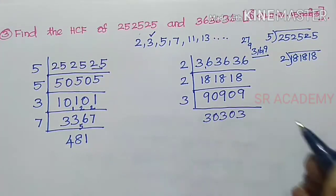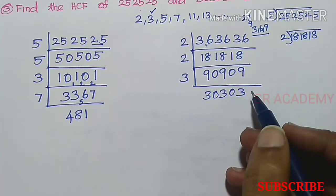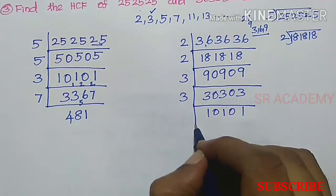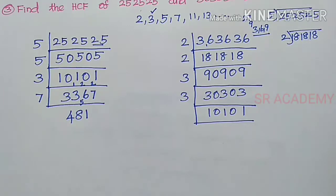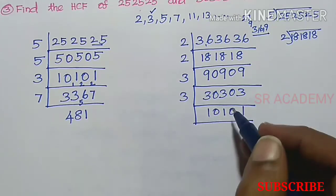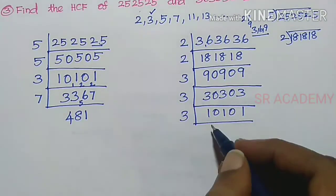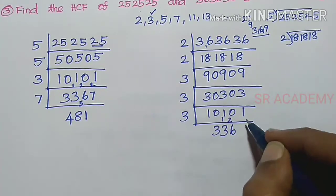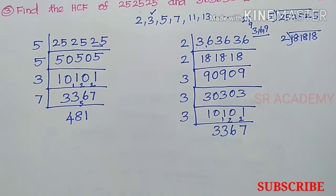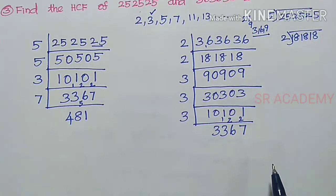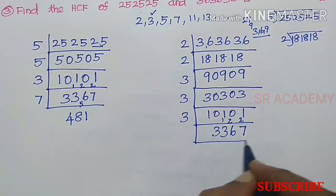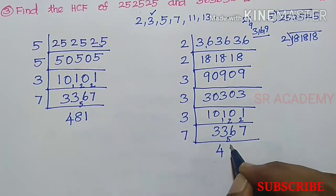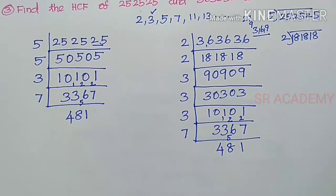Continuing: 3 threes are 9, remainder 0. Dividing by 3 repeatedly — 3 into 6 is 2, 3 into 18 is 6 remainder 0, 3 into 21 is 7. Then dividing by 7: 4 times 7 is 28 remainder 5, 8 times 7 is 56. Again 177. 481 is a prime number.